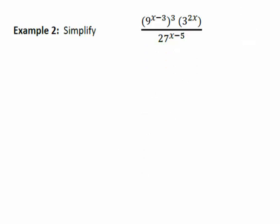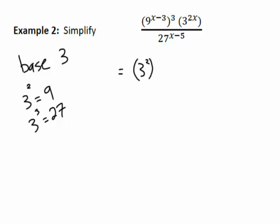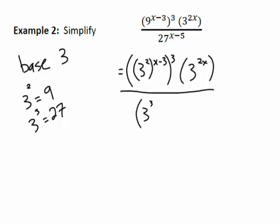Let's try one a little more complex. We see 9s, 3s, and 27s, and we want to find a base that works for all three. We usually go to a small number — and yes, it is base 3, because 3 squared is 9 and 3 cubed is 27. So we write 3 squared to the x minus 3, all cubed, multiplied by 3 to the 2x, over 27 which is 3 cubed to the x minus 5. That puts it all in base 3.